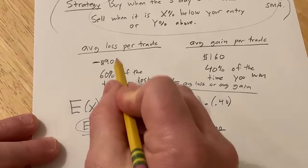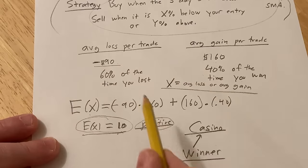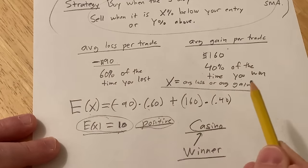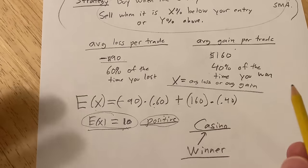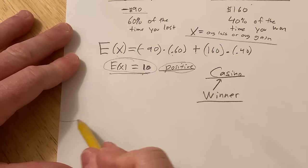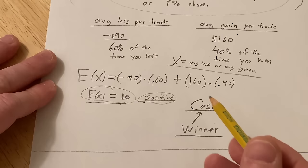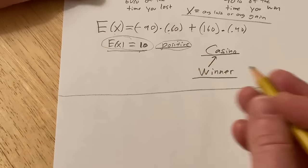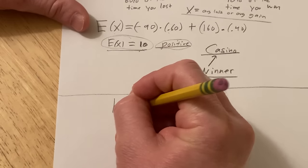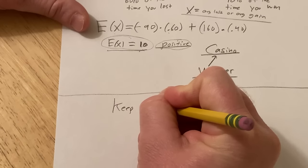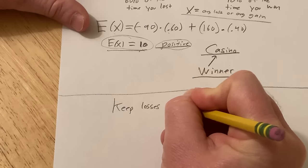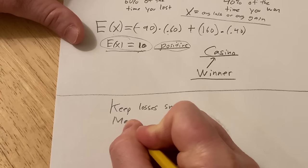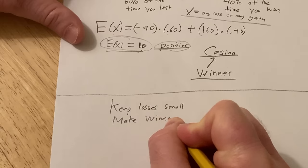So again, it's your average loss times the probability of losing plus your average gain times the probability of winning. Some other tips that people often tend to follow, by the way, when they're doing stuff like this, is they try to keep losses small and they try to make winners big.